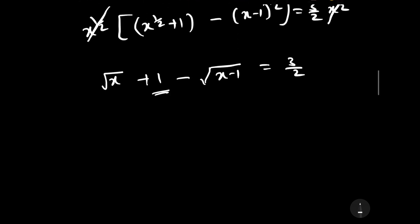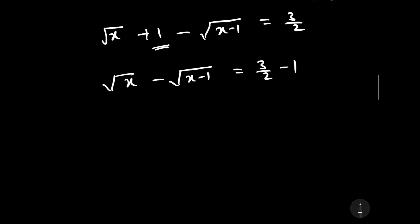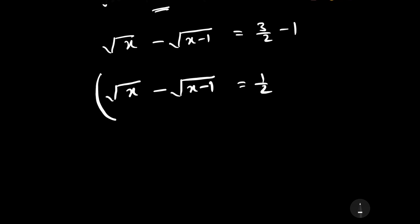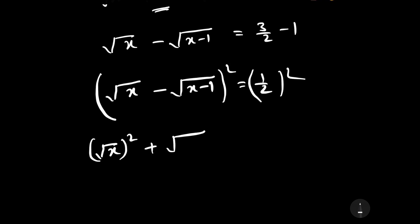Transposing the 1 to the RHS side, we have: square root of x minus square root of (x minus 1) is equal to 3/2 minus 1, which gives 1/2. Squaring both sides: (square root of x)² plus (square root of (x minus 1))² minus 2 times square root of x times square root of (x minus 1) is equal to 1/4.